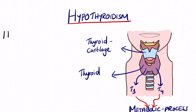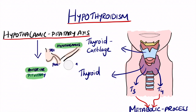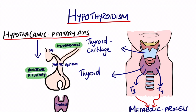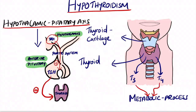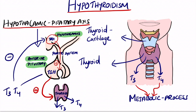To understand this, you need to think about the higher centres — the hypothalamic-pituitary axis. The hypothalamus releases TRH, which stimulates the anterior pituitary to release TSH, which goes on to produce T3 and T4 from the thyroid. This is a positive feedback leading to metabolic processes. T3 and T4 can then cause negative feedback, inhibiting TRH as well as TSH, keeping the body in balance.